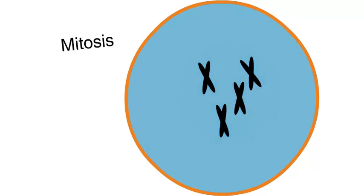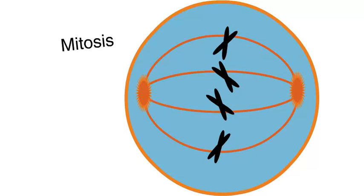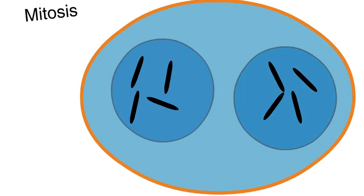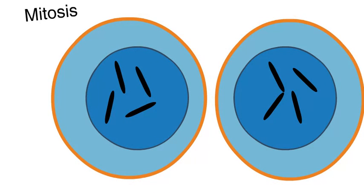In mitosis, the nuclear membrane dissolves, chromosomes line up, and sister chromatids are separated. Two new nuclei form, and the end products are two identical diploid somatic cells.